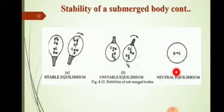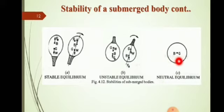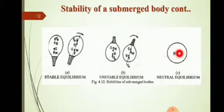The third condition is neutral equilibrium, which occurs when B and G coincide — that is, when the center of gravity and the center of buoyancy are at the same point. That state is called neutral equilibrium.